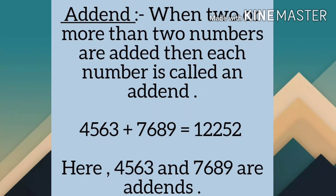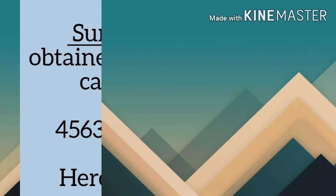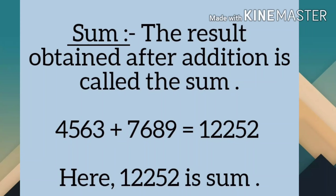What is an addend? When two or more than two numbers are added, then each number is called an addend. For example, 4,563 and 7,689 - ये दोनों numbers addends हैं। जब हम addends को add करते हैं तो result जो हमें मिलता है, हम उसे sum कहते हैं। The result obtained after addition is called the sum. यहाँ result है 12,252। आप addends और sum की definition को अपने homework copy में learn और write करोगे।